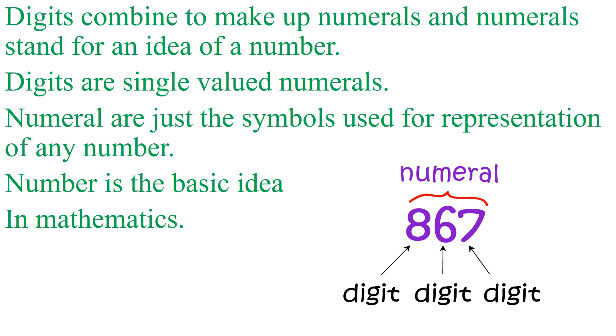Now we sum up the idea of digits, numerals, and numbers. Digits combine to make up numerals, and numerals stand for an idea of a number. Digits are single-valued numerals. As I have said, there are 10 digits in mathematics: 0, 1, 2, 3, 4, 5, 6, 7, 8, and 9. They all are single-valued. 10 is not a digit. 10 is a number consisting of 2 digits: 1 and 0. Numerals are just symbols used for representation of any number, and number is the basic idea in mathematics.